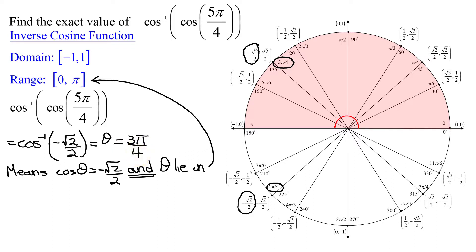So the inverse cosine of the cosine of 5π over 4 equals 3π over 4, and not 5π over 4.